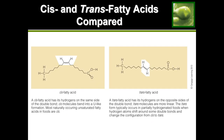A diagram shows: the normal unsaturated fat on the left has both missing hydrogens on the bottom, creating an imbalance and causing the structure to bend. After hydrogenation on the right, one hydrogen has moved to the other side, balancing the hydrogens, so the structure still has a double bond but no longer bends — that is technically a trans fat.